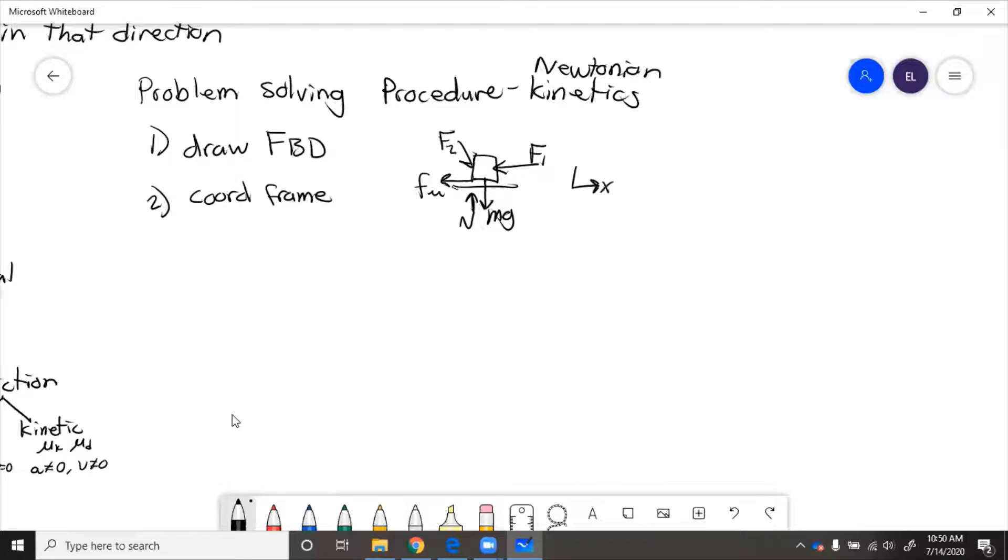So you might say x is this way, y is this way. Usually x is in the direction of motion and y is perpendicular to the surface.